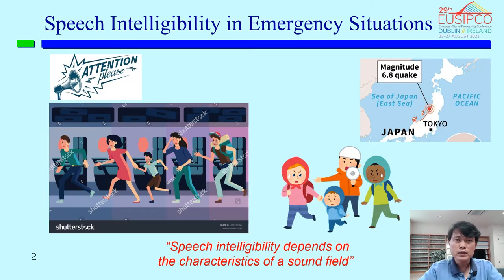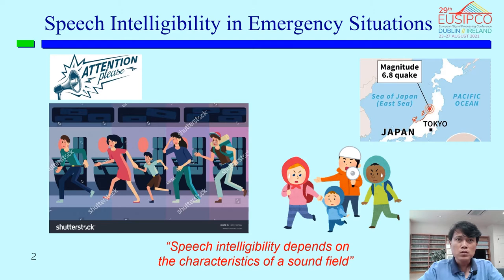Let's begin from emergency announcements that might occur in case of natural disasters, fires, violence, or in public spaces like train stations, department stores, and office buildings. Emergency announcements are important for the safety of our lives. For example, in a poor acoustic area such as a subway, we might hear the announcement — something like this.